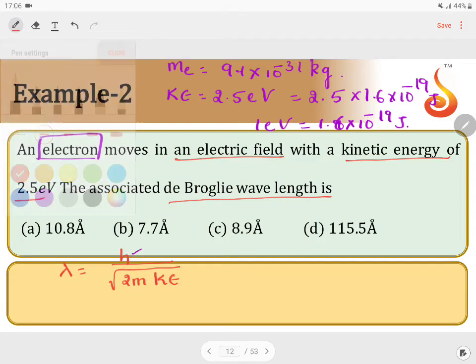Planck's constant. It is 6.626 into 10 power minus 34 joules second. If you want to substitute h as 6.626, kinetic energy must be in joules. Therefore, let us substitute it: 6.626 into 10 to the power of minus...